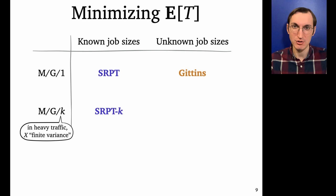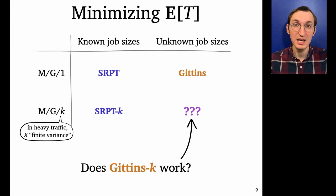So what about the M/G/k? Well, it turns out that even in heavy traffic for general job size distributions, we don't know the answer. But looking at this chart, there's a pretty reasonable guess for what the answer might be. What if instead of just serving the job of best Gittins rank, we served the top k best Gittins ranks? That would give us a policy we might call Gittins-k. So let's ask, does Gittins-k minimize mean response time in the heavy traffic M/G/k?